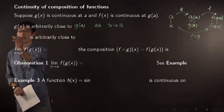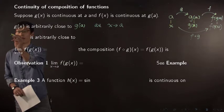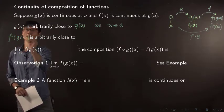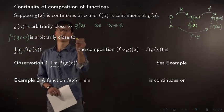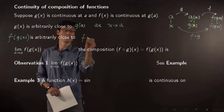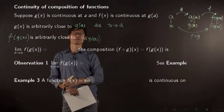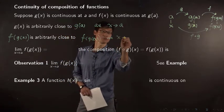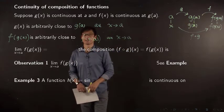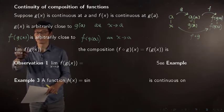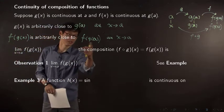we can pick x so that f of g of x is very close to f of g of a as x approaches a. That means the limit of this as x approaches a is exactly this value.